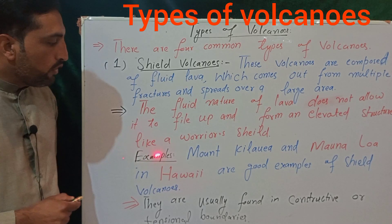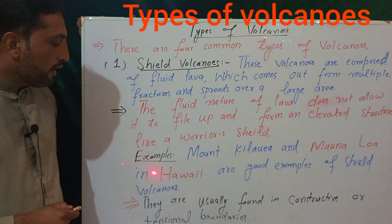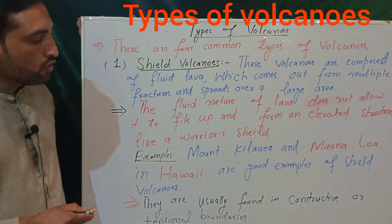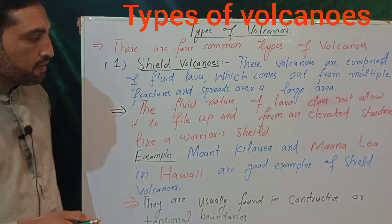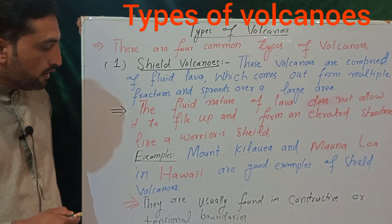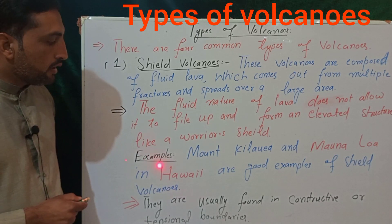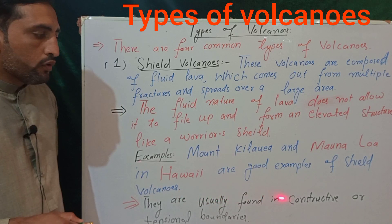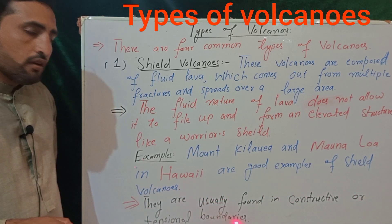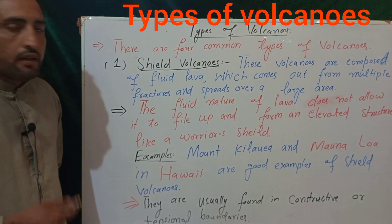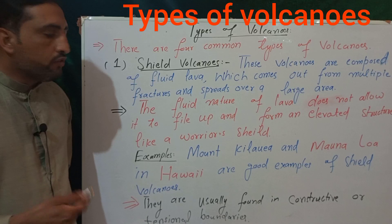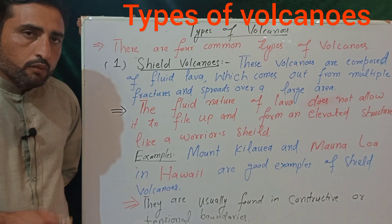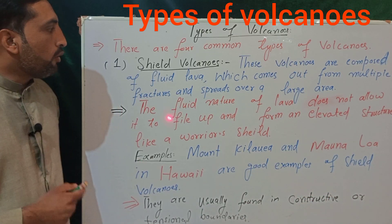For example, Mount Kilauea and Mauna Loa in Hawaii are good examples of shield volcanoes. These are two good examples of shield volcanoes located in Hawaii. They are usually found at constructive or tensional boundaries in the world. This is the first common type of volcano.